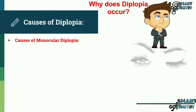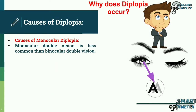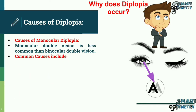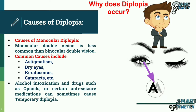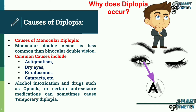Causes of monocular diplopia: Monocular double vision is less common than binocular double vision. Common causes include astigmatism, dry eyes, keratoconus, and cataracts. Alcohol intoxication and drugs such as opioids or certain anti-seizure medications can sometimes cause temporary diplopia.